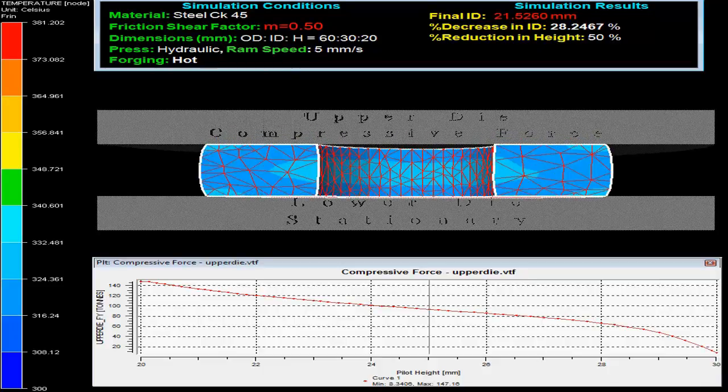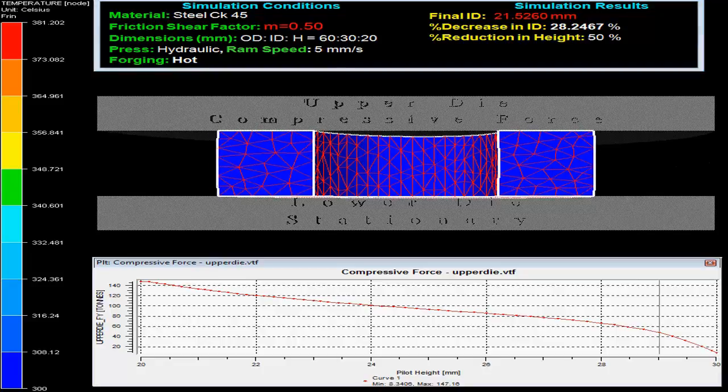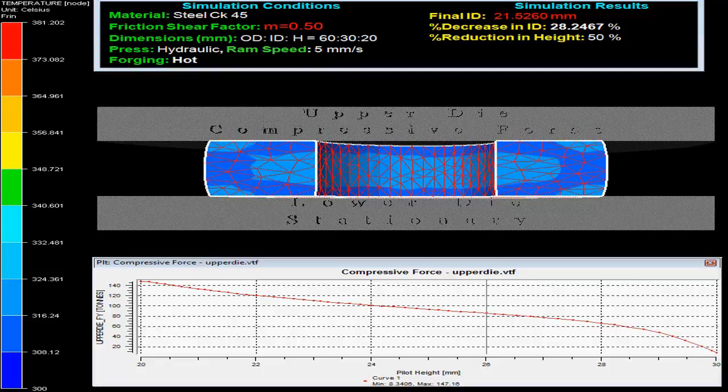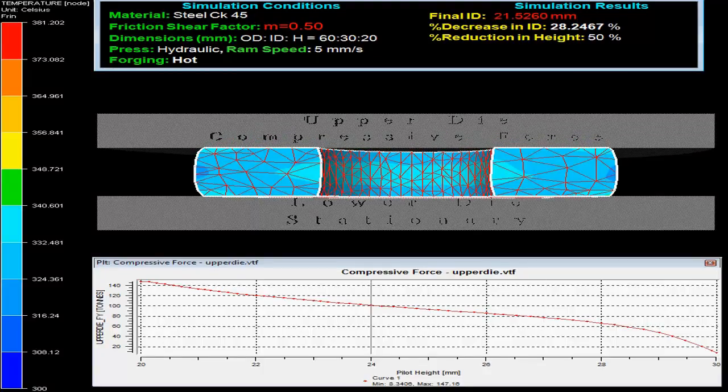Ring compression test has been widely used as a test to evaluate the friction condition in metal forming process. The video shows that a short ring specimen is plastically compressed between two flat dies with lower die stationary and upper die movable.